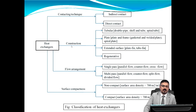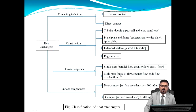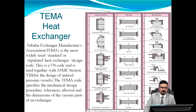Based on construction, there are four types: tubular, plate and frame, extended surface, and regenerative. Based on flow arrangement, we can have single pass — which can be parallel flow, counter flow, or cross flow — and multiple pass, which can be parallel flow, counter flow, or split flow. Heat exchangers can also be classified by surface compactness as non-compact or compact heat exchangers.